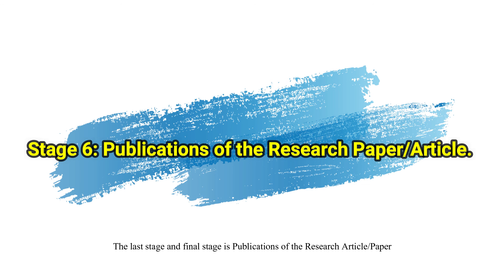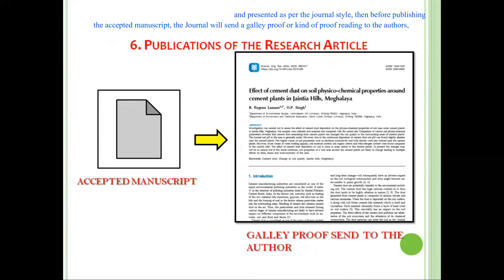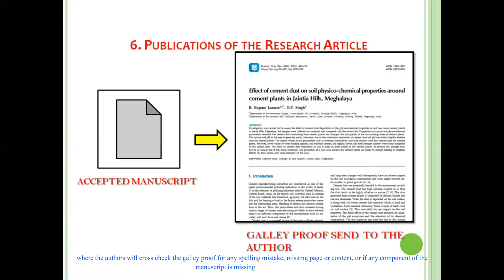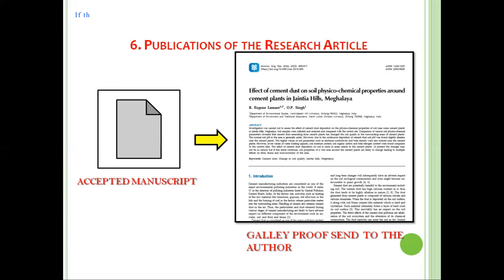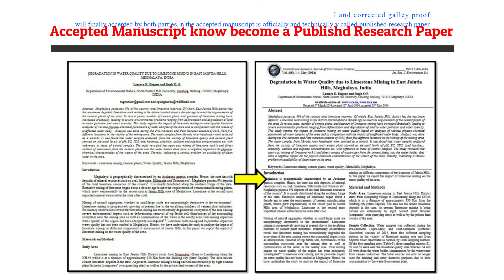The last and final stage is the publication of the research article. The accepted manuscript will be designed, edited, and presented as per the journal style. Before publishing, the journal will send a galley proof to the authors, who will cross-check for any spelling mistakes, missing content, or missing components. If anything is missing, it must be immediately reported to the journal, and the corrected galley proof is finally accepted by both parties. The accepted manuscript is then officially and technically called a published research paper.